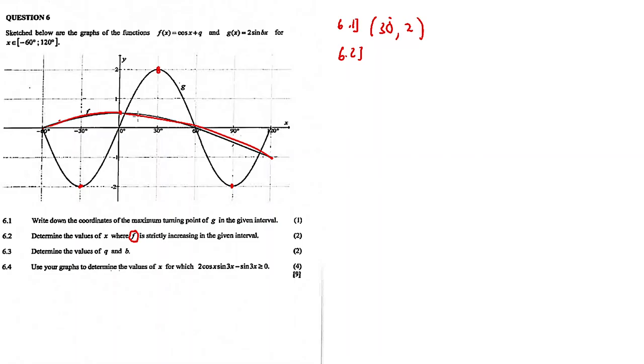The function is increasing where there's a positive gradient or the function is going up. Where it's going down, the function is decreasing. So from negative 60 degrees to zero degrees, the function is increasing. The answer is negative 60 degrees. The x values for the function f to be increasing in this given interval are between negative 60 and 0 degrees. We exclude negative 60 degrees because at 60 degrees the function is not increasing. So it's negative 60 degrees to 0 degrees excluded.